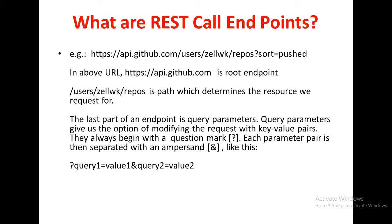In the above URL, the first part — https://api.github.com — is the root endpoint. The last part of an endpoint is the query parameter. Query parameters give us the option of modifying the request with key-value pairs. We always begin with a question mark, and each parameter pair is then separated with an ampersand symbol, like: query1=value1&query2=value2 and so on.